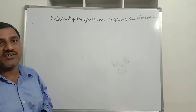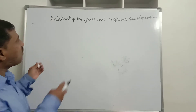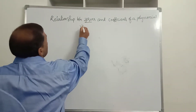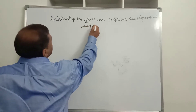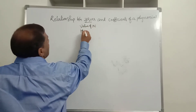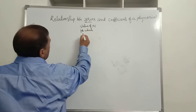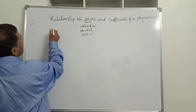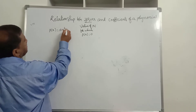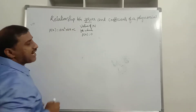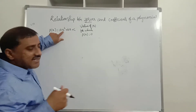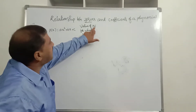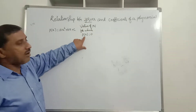What is a zero of a polynomial? Zero of a polynomial is the value of x for which p(x) is equal to zero. If p(x) is a polynomial — for example, p(x) = ax² + bx + c — then the value of x for which p(x) equals zero is known as the zero of the polynomial p(x).